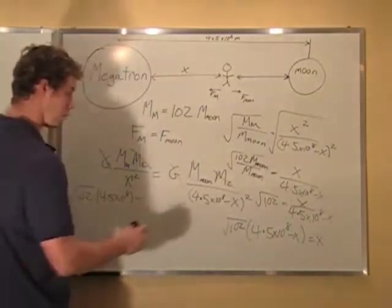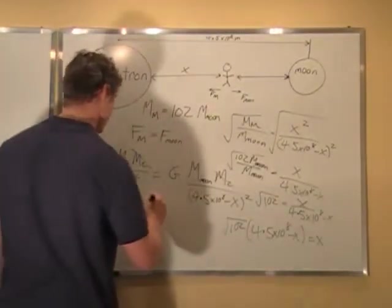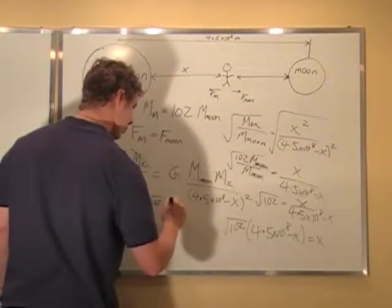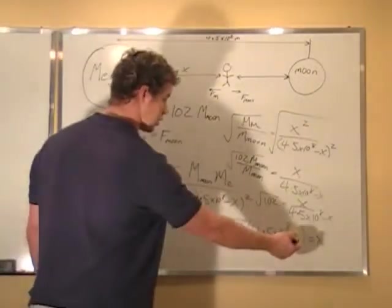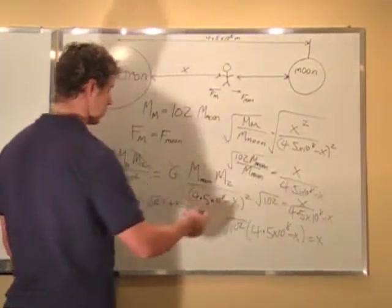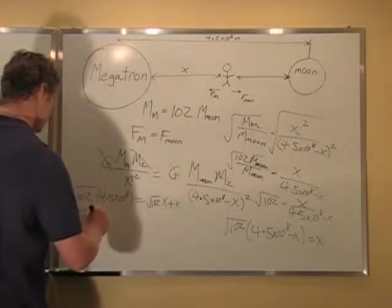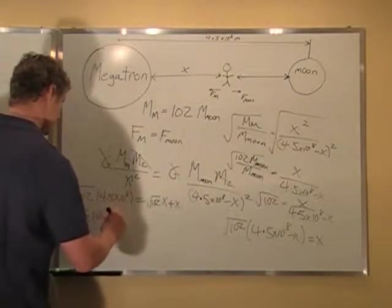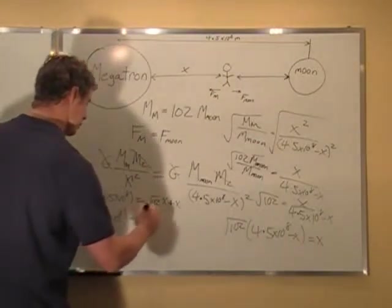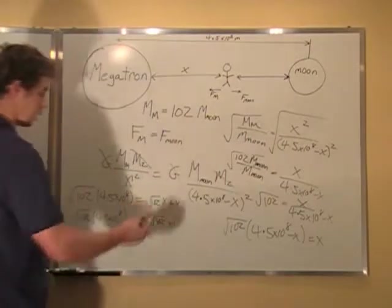I'm going to multiply this over here, and I'm going to multiply this times the X, and I'm going to add it to the other side all in one step. So I have root 102X plus X. So the root 102 times negative X gives me negative root 102X. I add it to the other side. Give me X plus root 102X. So I have root 102 times 4.5 times 10 to the 8. Equals X root 102 plus 1. Factoring the X out of there. Now I divide this both sides.